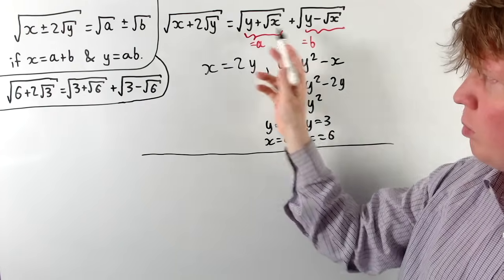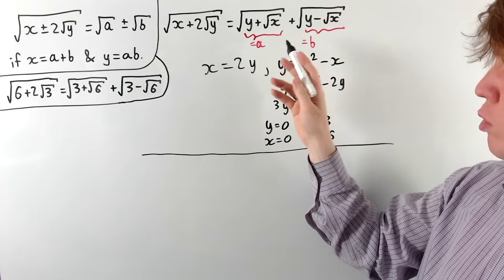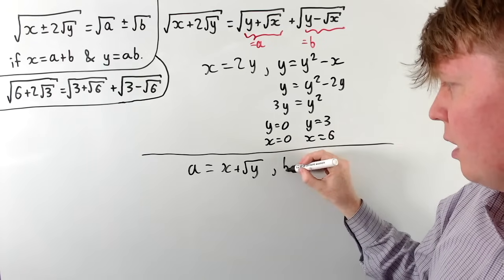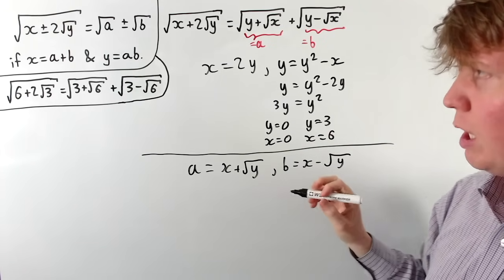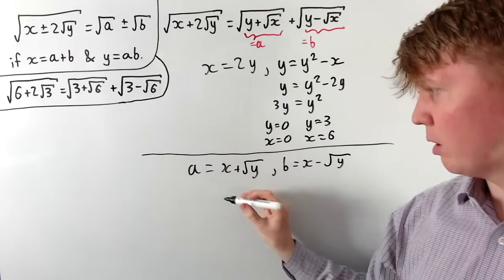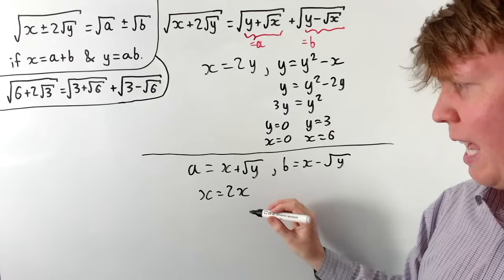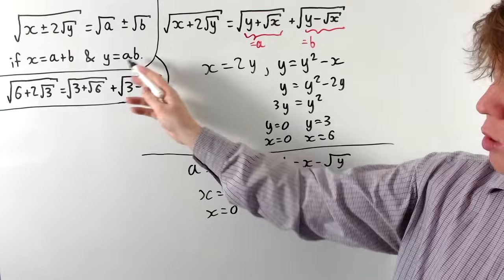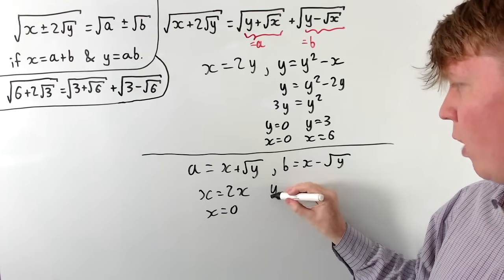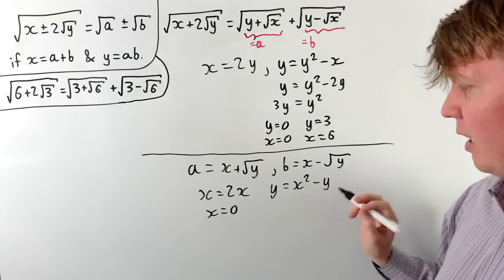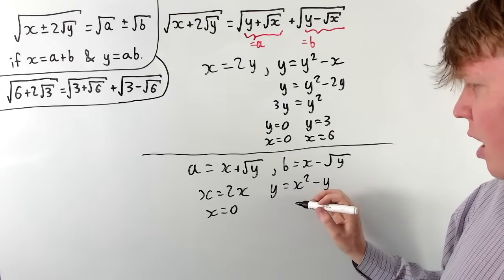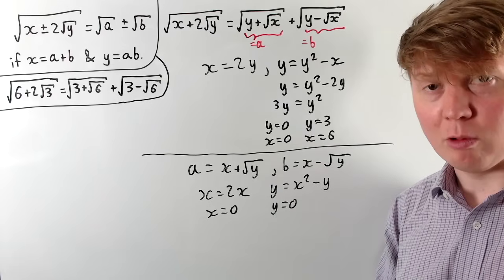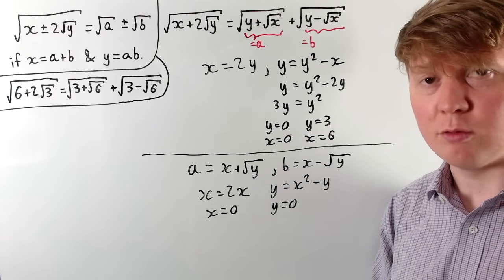What if we swap x and y? So let a = x + √y and b = x − √y. Then x = a + b = 2x forces x to be 0. From y = ab we get a difference of squares y = x² − y, and since x = 0 this gives y = −y, so y = 0 as well. This approach only yields trivial solutions.